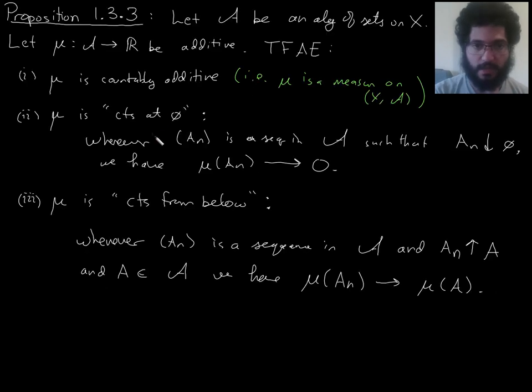So, that means whenever I have a sequence of things in fancy A that are nested and intersect down to the empty set, then μ of them converges to 0.